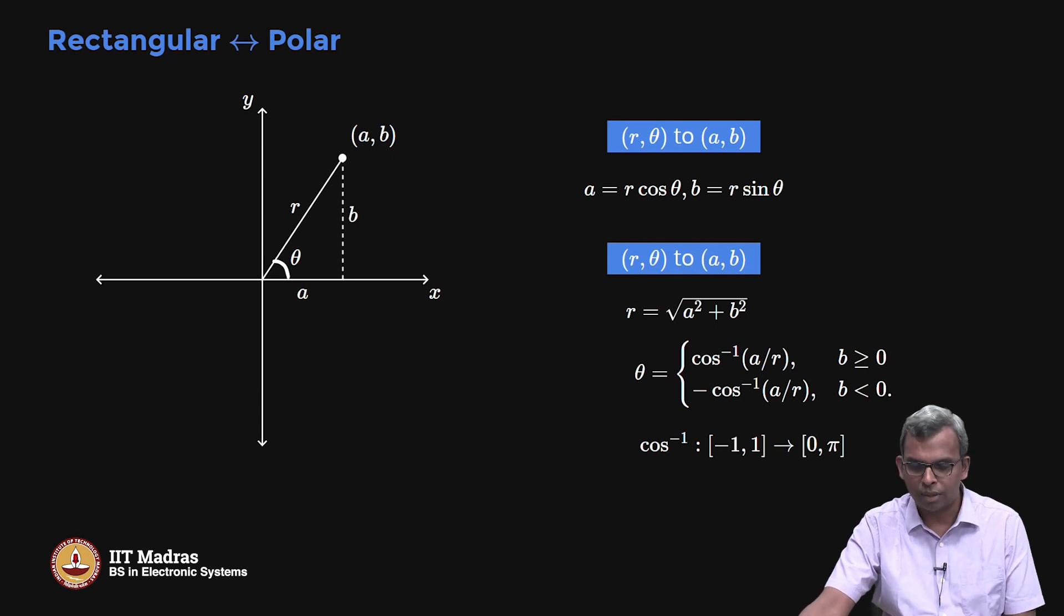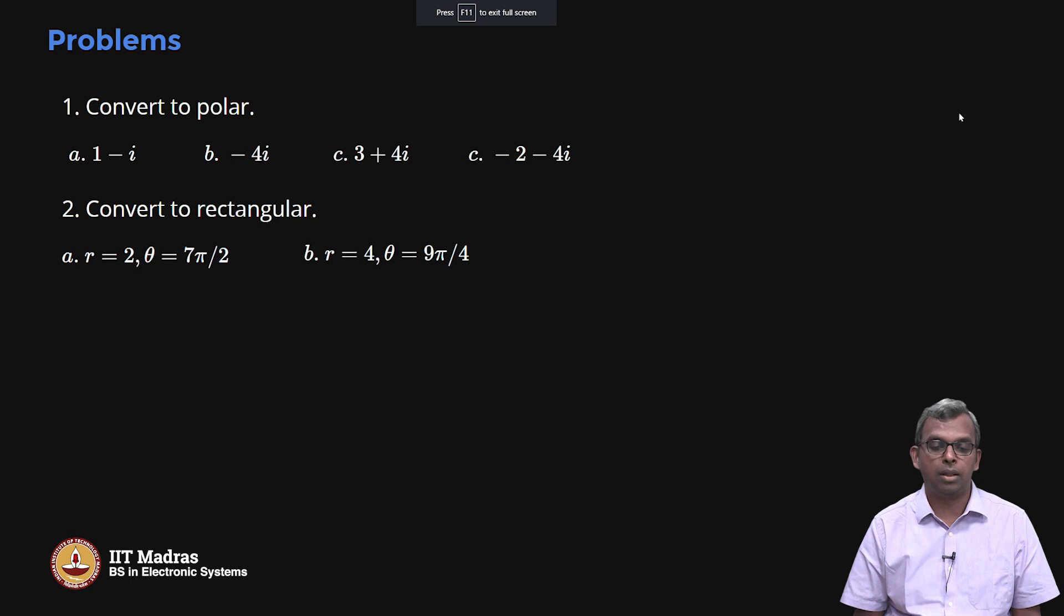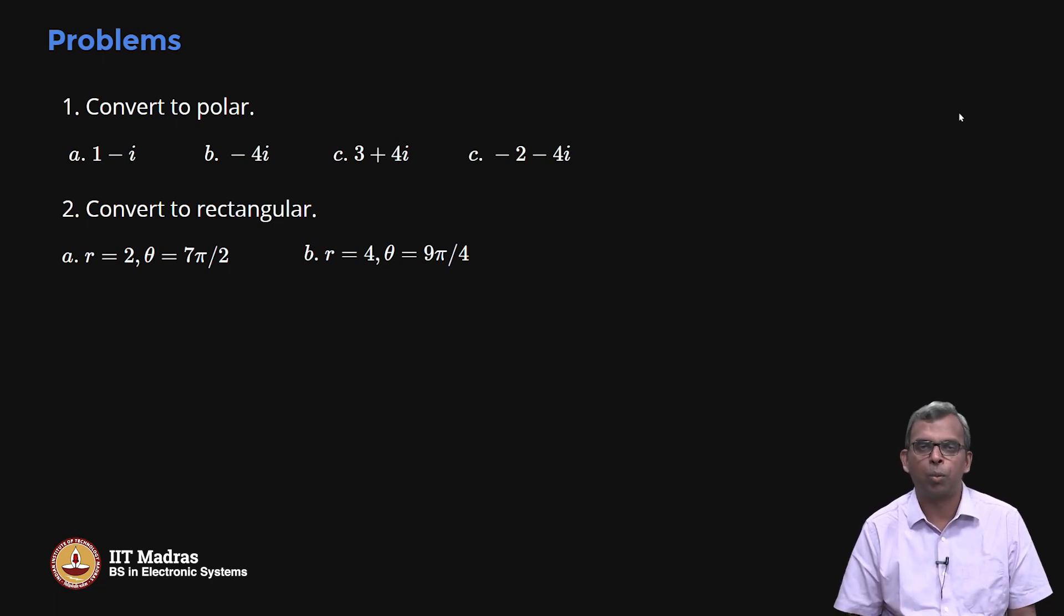Coming back to this problem slide, this is a very standard problem. I have given you a rectangular coordinate thing, I want you to convert to polar. I have given you a polar coordinate, convert to rectangular. It is just very simple. I hope you have seen these kind of problems before. That is an introduction to polar coordinates. Thank you very much.